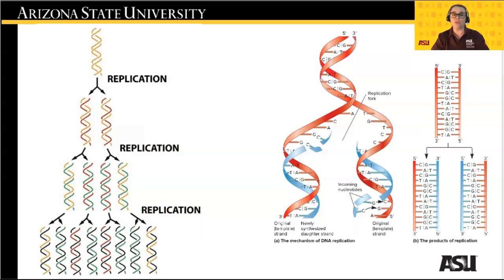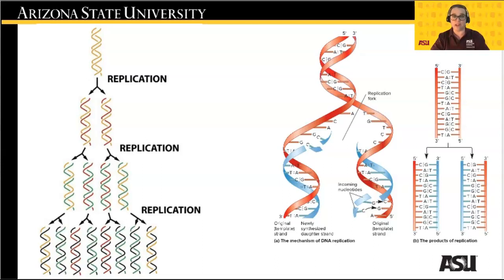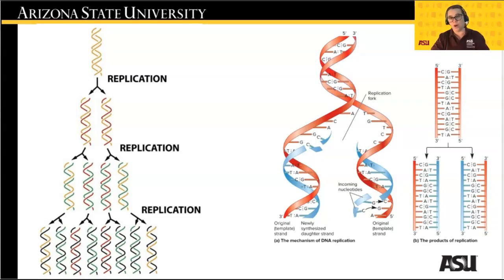In order for DNA to replicate, each of the parent strands must be separated, then copied with complementary base pairing, creating their new accompanying daughter strand. Then each of those two strands — one original parent strand and one original daughter strand — separate and create a new complementary accompanying daughter strand.